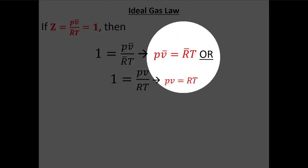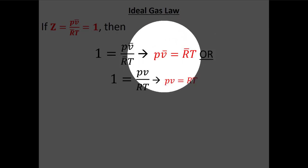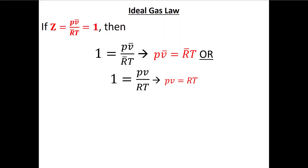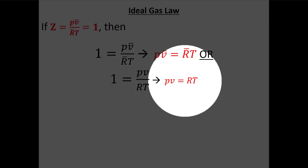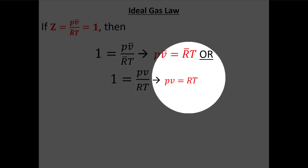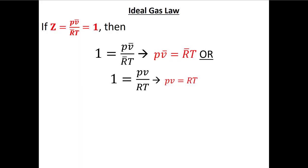This is the ideal gas law. In chemistry or physics you've probably talked about it in terms of moles. In thermodynamics as mechanical engineers we're usually talking about mass, so we'll use P times specific volume — volume over mass — times the specific gas constant, which is different for every gas, multiplied by T. It's cool because we can use kilograms or pounds, but the price is a different gas constant for every gas.